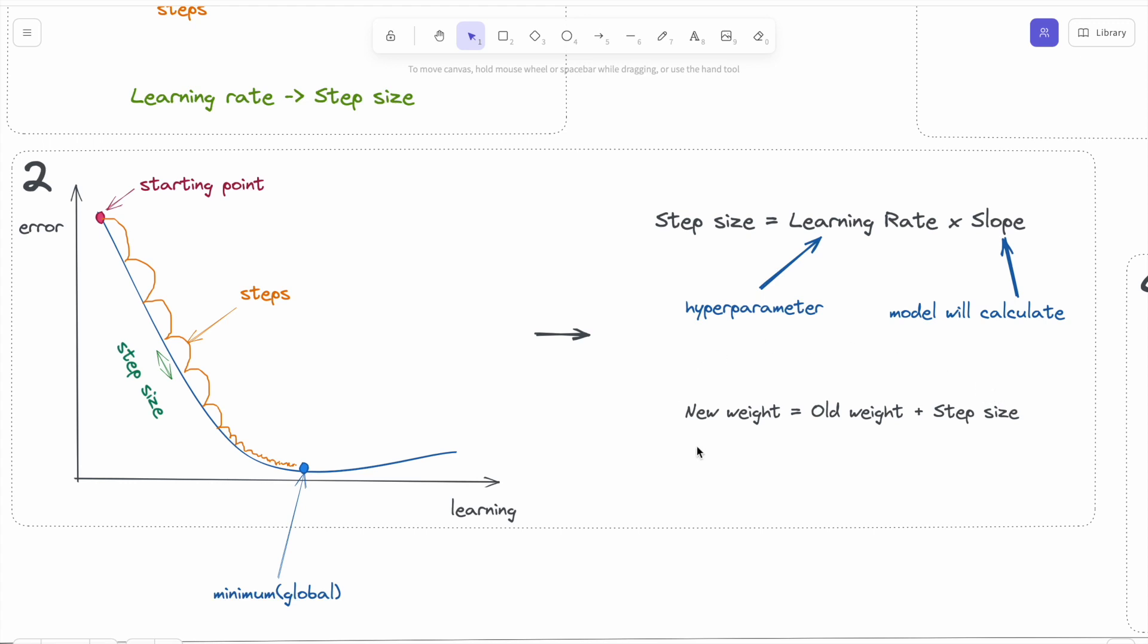For each weight, the model will use the old weight and will add the step size to find the new weight. In other words, since learning rate affects step size, and step size is part of the updating mechanism, learning rate value affects the updating process.